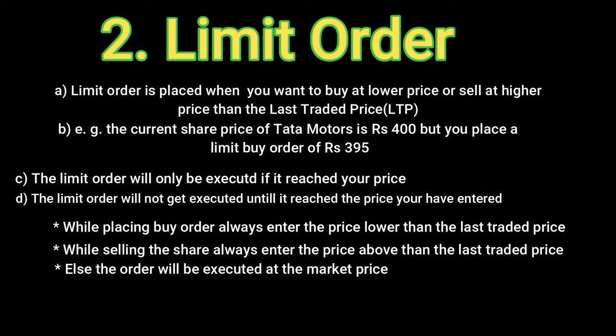Now let's discuss what a limit order is. A limit order is placed when you want to buy at a lower price or sell at a higher price. For example, if there is a share of Tata Motors trading at 400 rupees and you want to buy it for 395, you place a limit order, not a market order. And if you want to sell it for 410 rupees, you place a limit order. The limit order will be executed only if it reaches your price. If you place a bid of 395 and the price doesn't come down to 395, your order will not be executed. Always bid lower for a buy limit order — if you want to buy at 400, place a price lower than 400. If you want to sell, place a price higher than 400. Otherwise it will be placed as a market order and executed instantly.